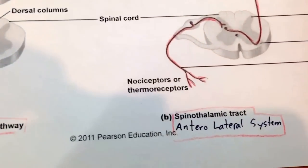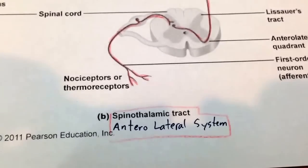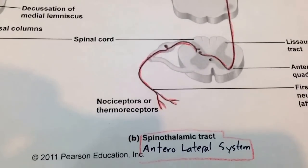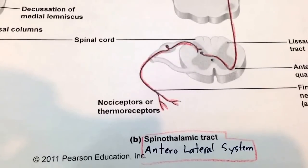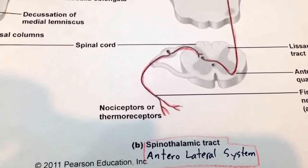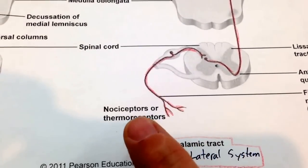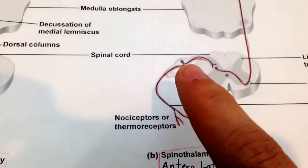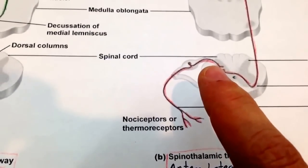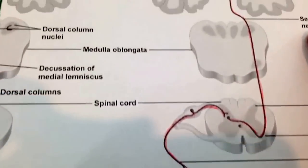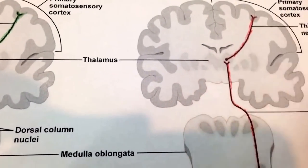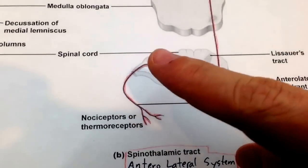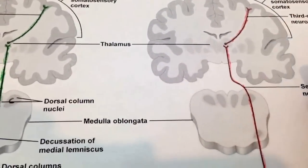The other sensory pathway is called the anterolateral, or spinothalamic tract. It starts in the spine and moves up to the thalamus — hence spinothalamic. It's also called the anterolateral tract because some neurons run on the anterior side and some on the lateral side. In general, nociceptors sensing pain, thermoreceptors sensing temperature, and crude touch receptors enter in the back, pass through the dorsal root ganglia, synapse, and then decussate at that level. They go straight up to the thalamus and then to the post-central gyrus. These can be called first-order, second-order, and third-order neurons.